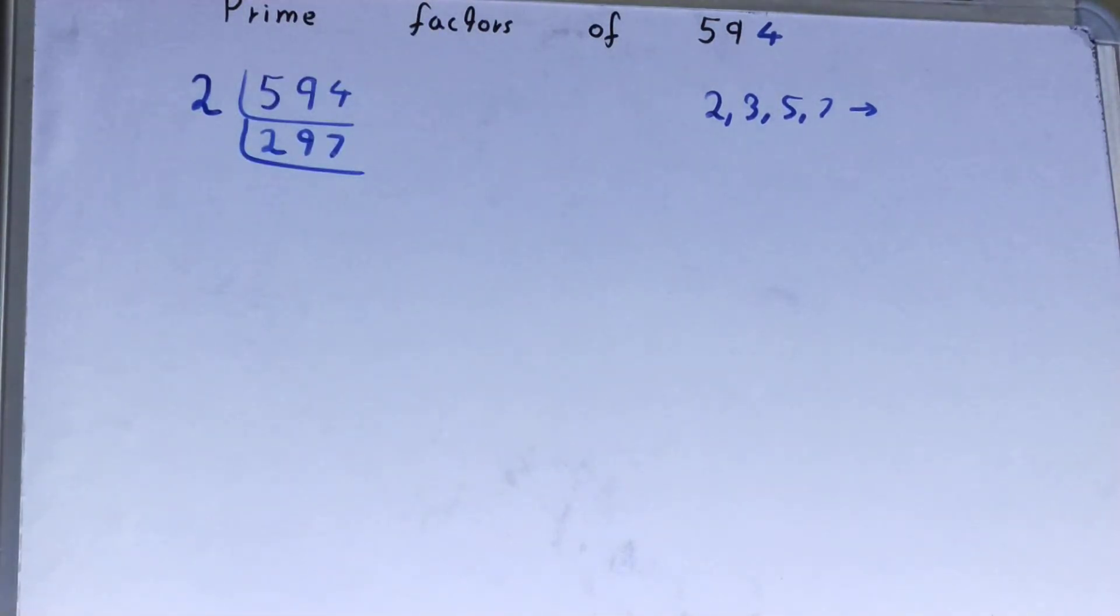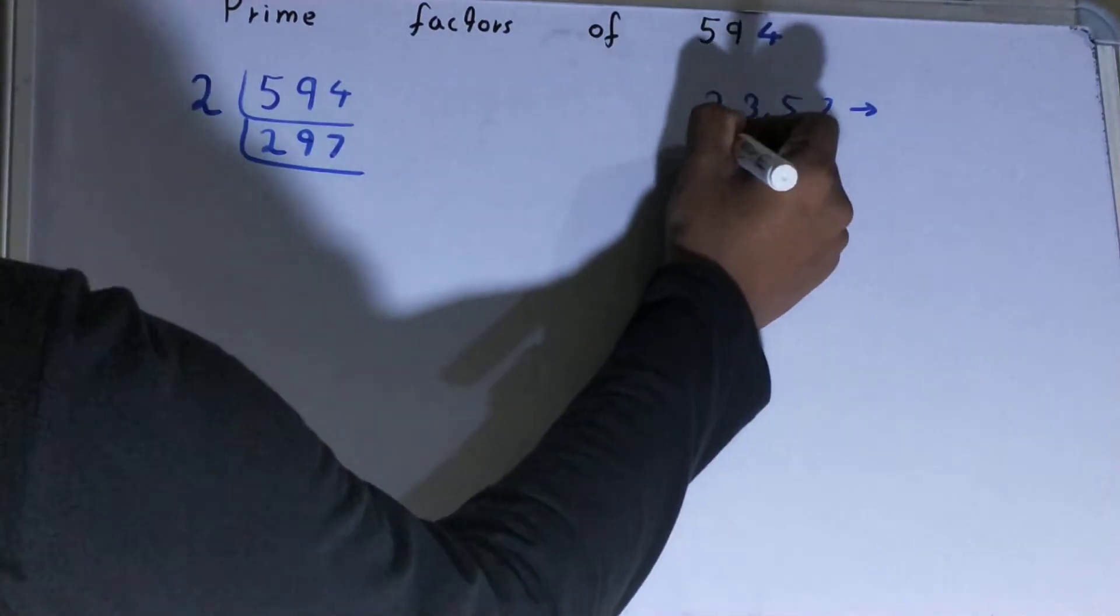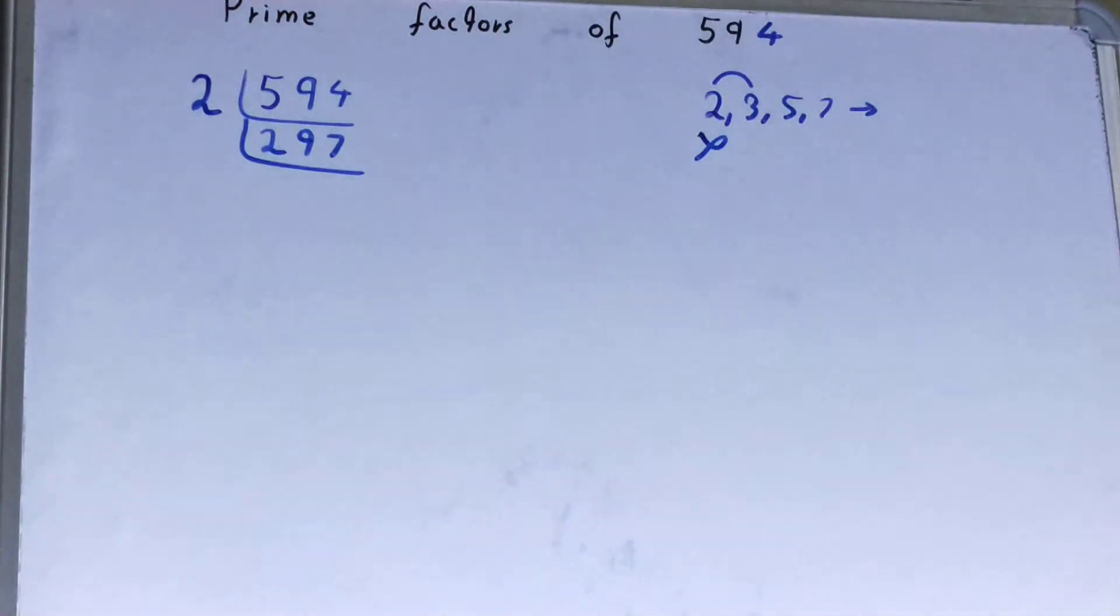Now, is 297 further divisible by 2? The answer is no, it is an odd number. So we'll go to the next lowest prime number, which is 3. Is 297 divisible by 3?